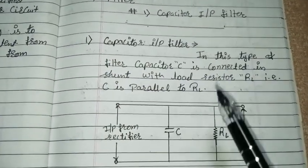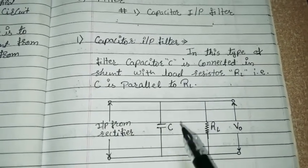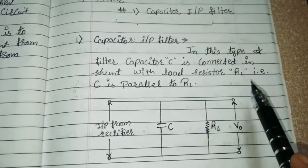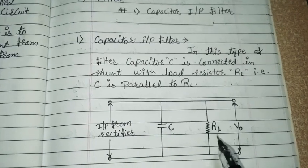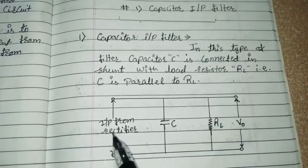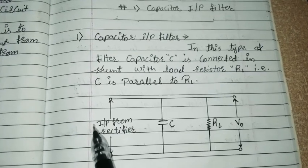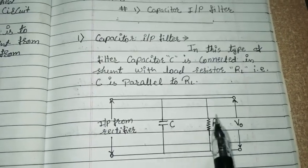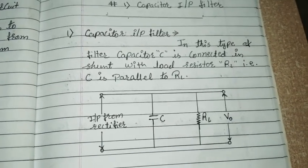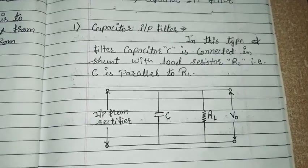What is a capacitor input filter? In this type of filter, capacitor C is connected in shunt with load resistor RL — that is, C is connected in parallel to RL. Here is the circuit diagram. The input from the rectifier, that means the output of the rectifier, is provided as input to the capacitor input filter, and then this filter is used to filter out the AC component.